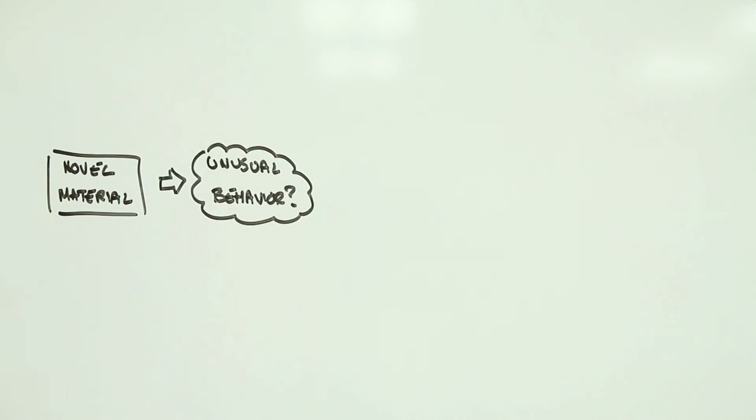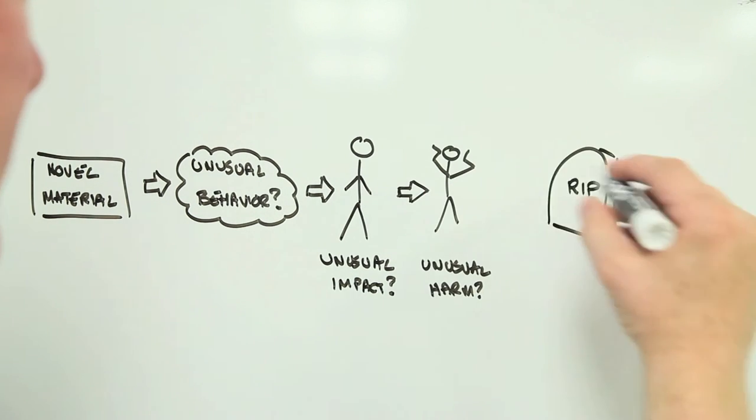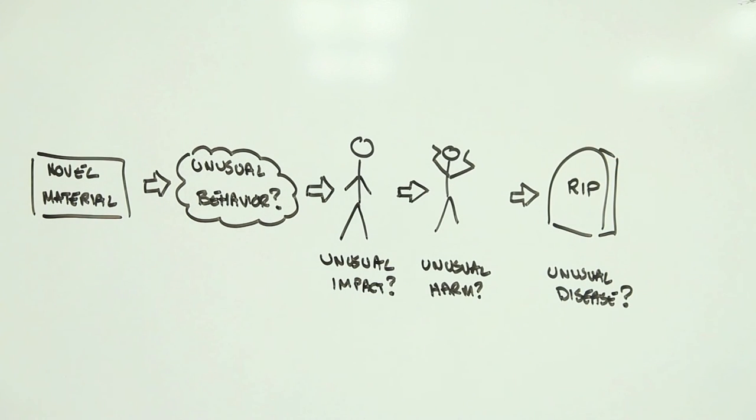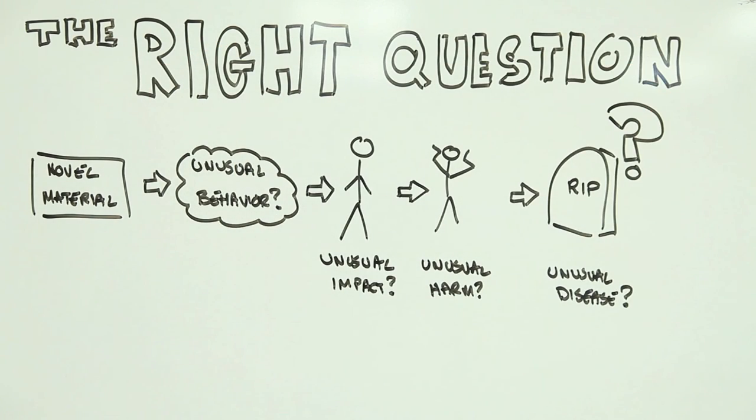On the surface, the question makes a lot of sense. If a material is designed to behave in unusual ways, who's to say that that unusual behavior won't lead to unusual biological impacts that in turn lead to unusual harm and unusual diseases? However, this is also a somewhat misleading question, and here's why.